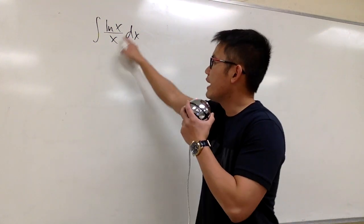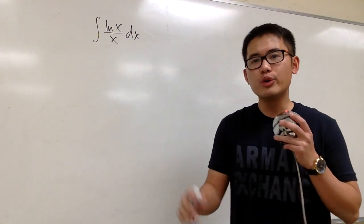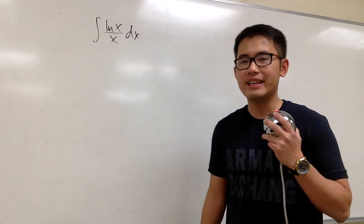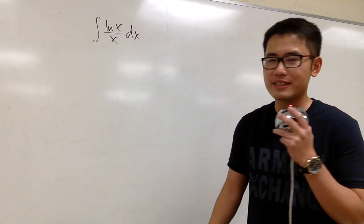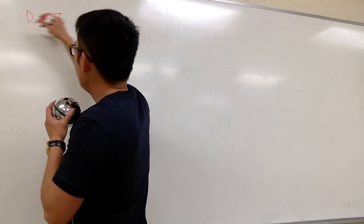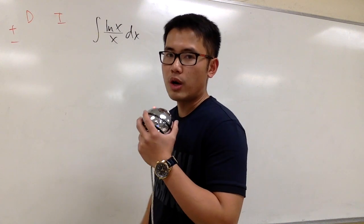So here we have the integral ln x over x, and let me show you how we can take care of this. Two ways. The first way is, let's use integration by parts. So let me put down the DI on the side, and then I will have the plus minus ready on the side as well.